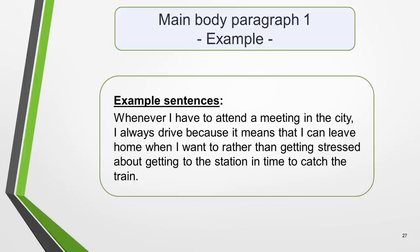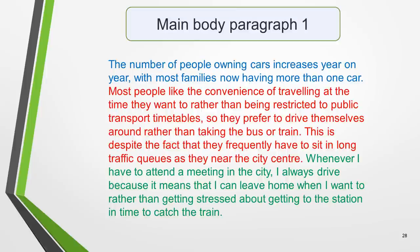Finally, we add an example to support our main point. If you can't think of a real example, it's fine to make one up, as long as it's believable — the examiner isn't going to check your facts. Alternatively, you could add another piece of information to support your idea. Here's my example: Whenever I have to attend a meeting in the city, I always drive because it means that I can leave home when I want to, rather than getting stressed about getting to the station in time to catch the train. That's the three parts of our first main body paragraph complete. Here's the finished paragraph — I've colour-coded it to highlight the three parts. Pause the video and read it through so that you can hear how the three parts flow from one to another.